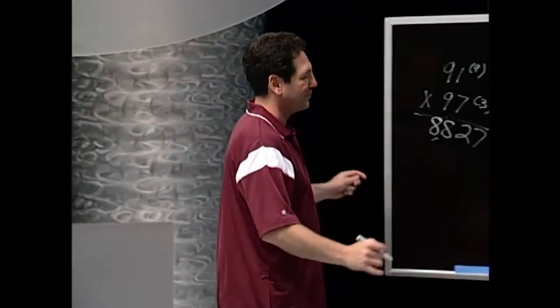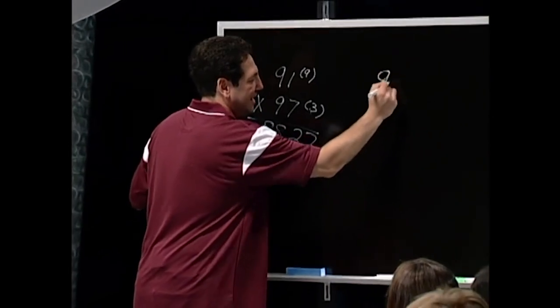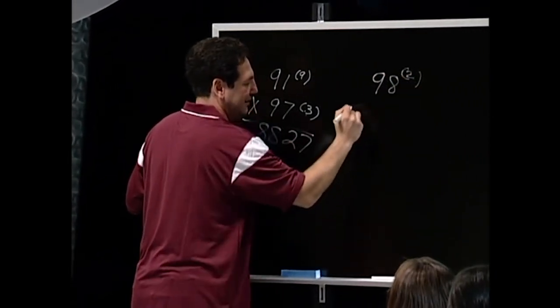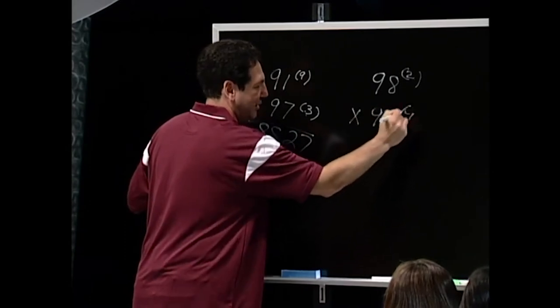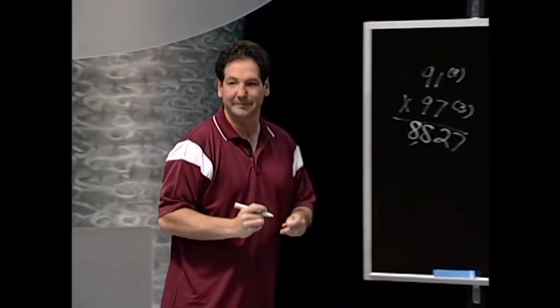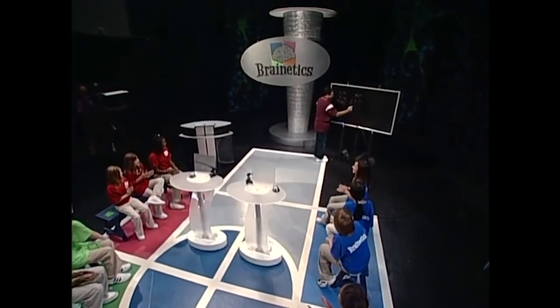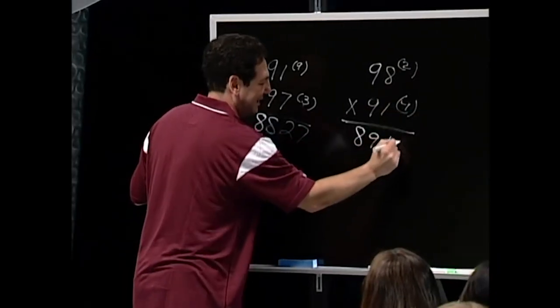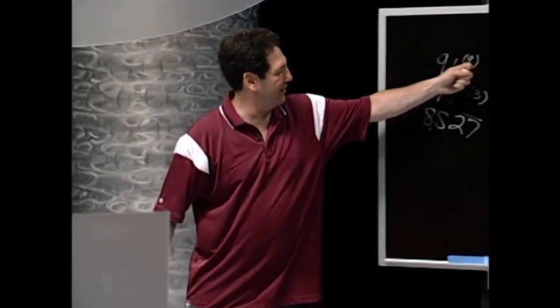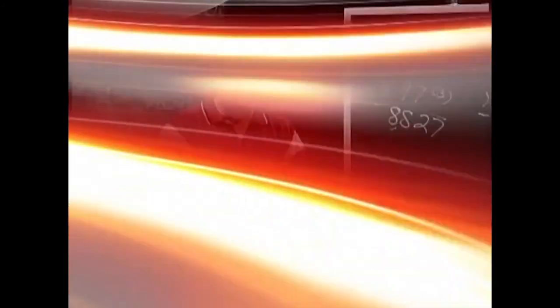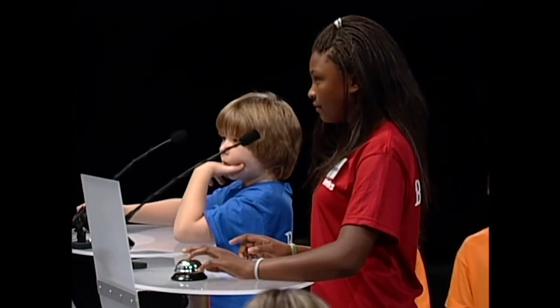Ready? I'm going to give you guys one to see if you can do it. 98, which is 2 away, times 91, which is 9 away. Who has an answer? Brianna? 8918. How many got 8918? You guys are awesome! Perfect — 98 minus 9 is 89, and 2 times 9 is 18. One thing to remember: if you multiply the two numbers in parentheses together and they're less than 10, you have to put a 0 in front of it. That's the second part of the answer.